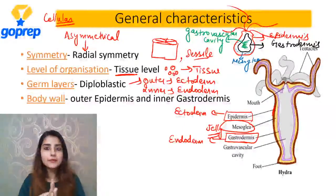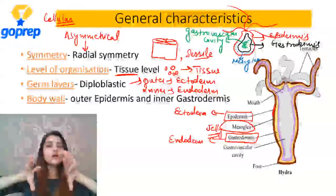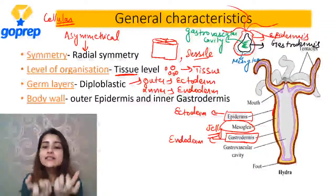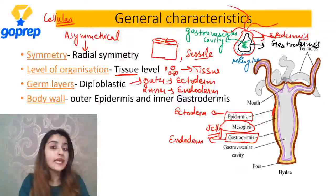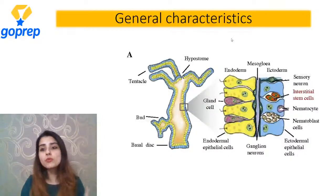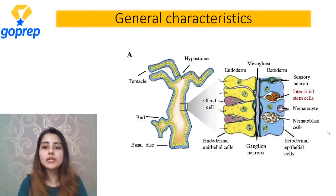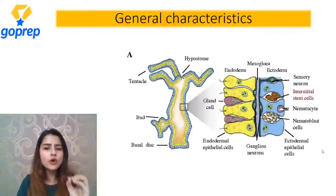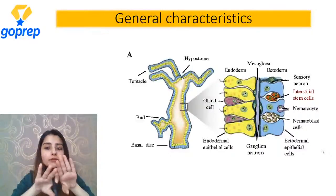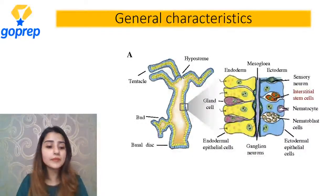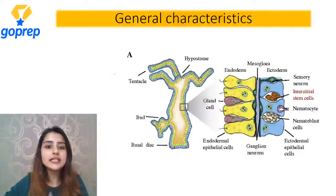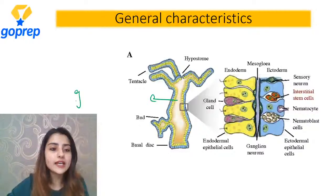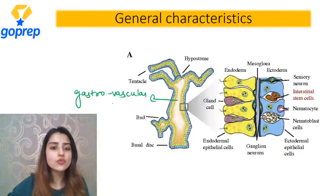So ab humein kya pata chala Coelenterate ke baare mein - baahir wali wall kya hogi? Epidermis. Andar wali wall kya hogi? Gastrodermis. Us gastrodermis ke andar jo khaali jagah hai that is called as gastrovascular cavity. Porifera ki cavity ka naam kya tha? Spongocoel. Toh wahan par kya thi spongocoel, yahaan par is cavity ka kya naam hai? Gastrovascular cavity.